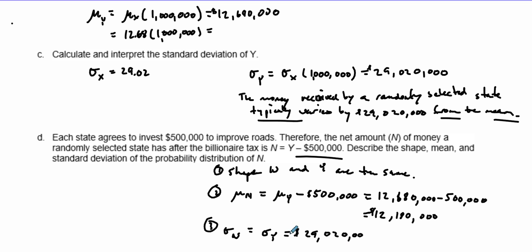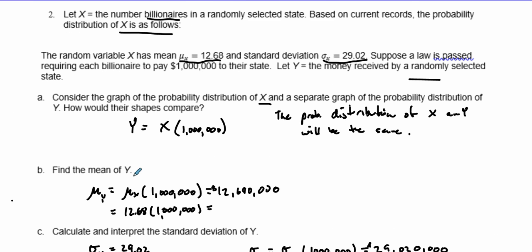So the shape doesn't change, the mean subtracts that value, but standard deviation remains the same. That's the transformations of a probability distribution. I hope this helps you on your further problems. Good luck and God bless.